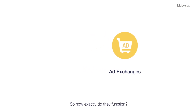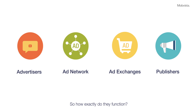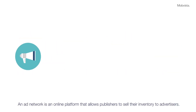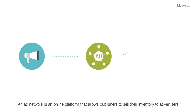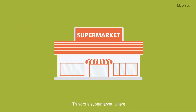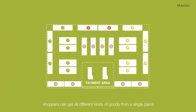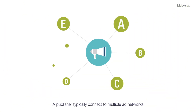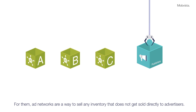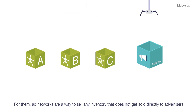So how exactly do they function? An ad network is an online platform that allows publishers to sell their inventory to advertisers. Think of a supermarket, where shoppers can get all different kinds of goods from a single place. A publisher typically connects to multiple ad networks. For them, ad networks are a way to sell any inventory that does not get sold directly to advertisers.